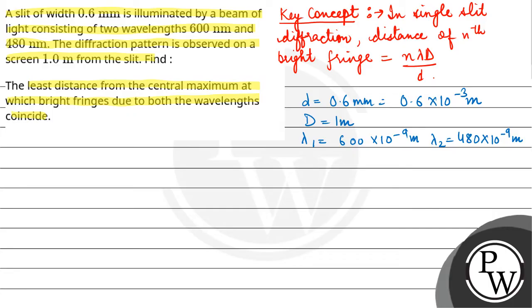Lambda 1 is 600 into 10 to the power minus 9 meter, lambda 2 is 480 into 10 to the power minus 9 meter. The nth fringe of lambda 2 coincides with the n minus 1th fringe of lambda 1.